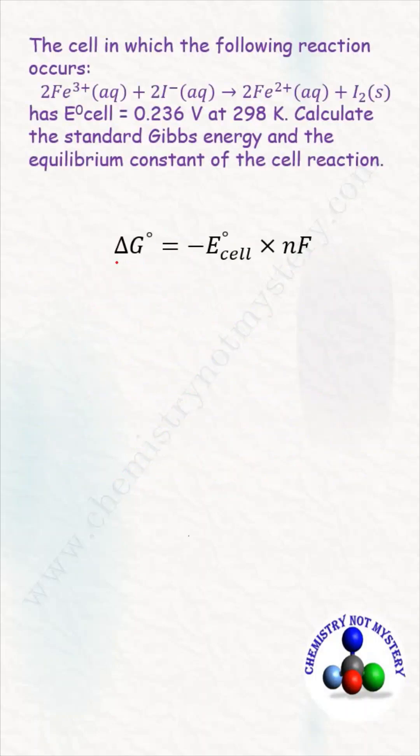To solve this question we have the formula: ΔG° = -E°cell × nF. E°cell is given. The value of Faraday can be taken as 96500 coulombs. To calculate the value of n, let's consider the reaction.